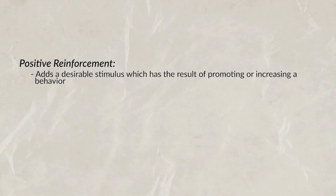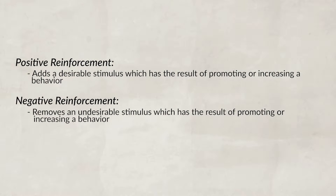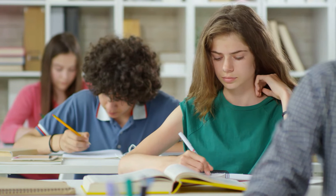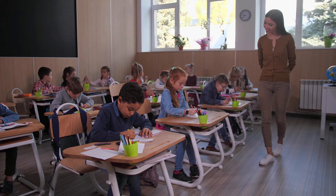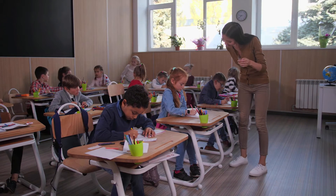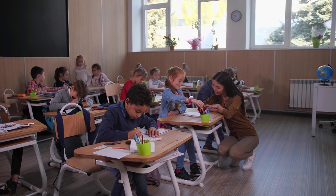In operant conditioning there is not just positive reinforcement but negative reinforcement as well, and understanding the difference is crucial. Positive reinforcements add a desirable stimulus, promoting or increasing a behavior. Negative reinforcements remove an undesirable stimulus, also resulting in promoting or increasing a behavior. For example, getting 100% on a test and receiving a gold star is positive reinforcement — you gain a stimulus that promotes you to keep studying. On the other hand, if a class is behaving well and the teacher drops a quiz or removes a homework assignment, that is negative reinforcement — removing an unpleasant stimulus to reinforce the good behavior.